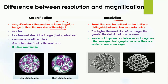Resolution, on the other hand, means the ability to distinguish between two separate points. If we have two cells, resolution refers to how clearly we can see those two cells as distinct from each other — that is the resolution of the microscope.